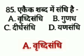Ekaik shabd mein sandhi hai — option A: vriddi sandhi, option B: guna sandhi, option C: dheerga sandhi, option D: yen sandhi. The answer is option A, vriddi sandhi. Ekaik vriddi sandhi ka udaaran hai.